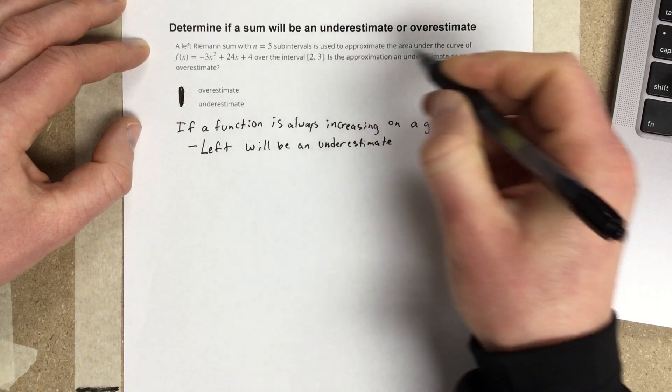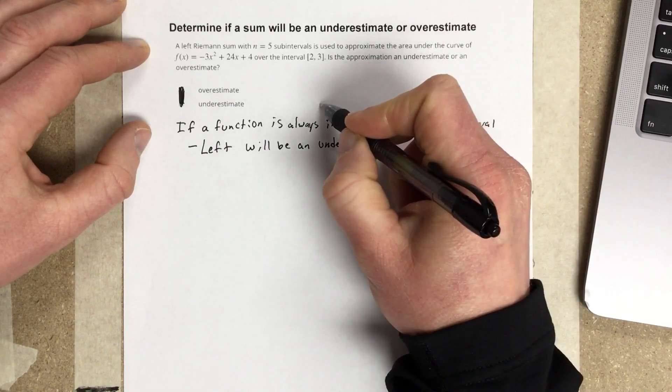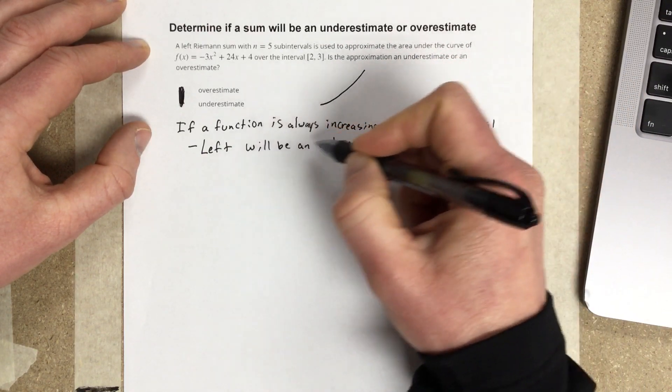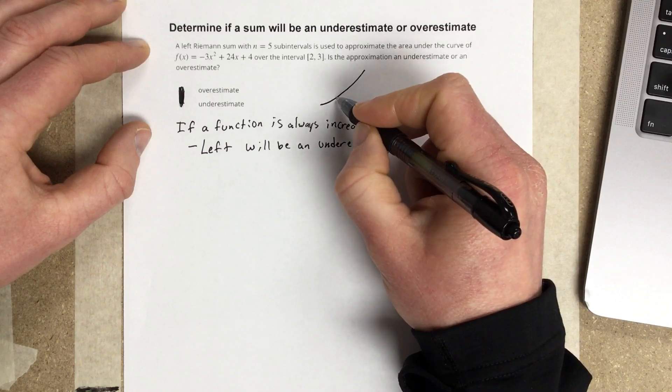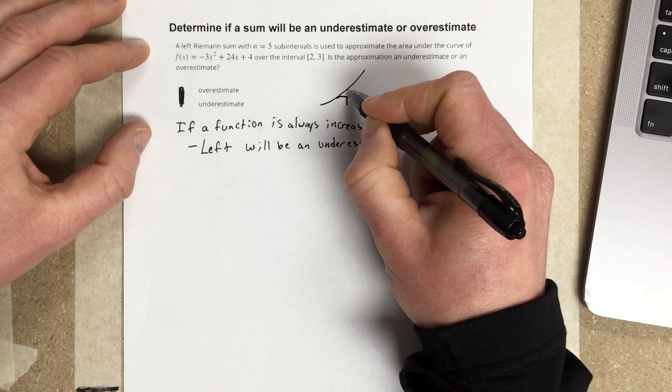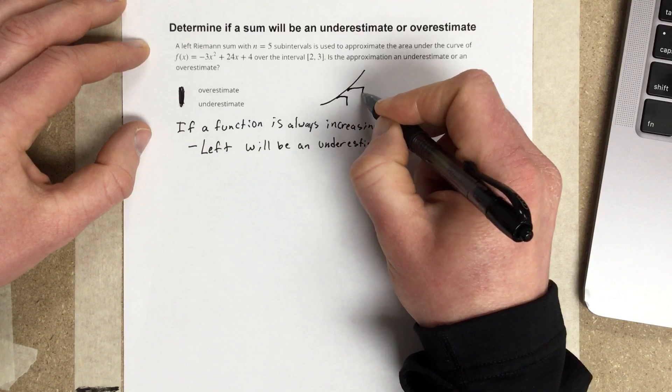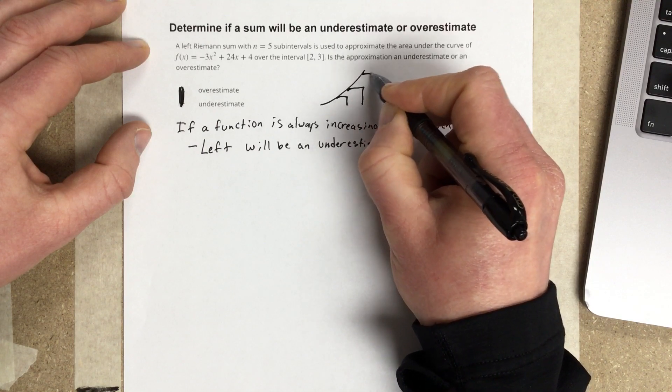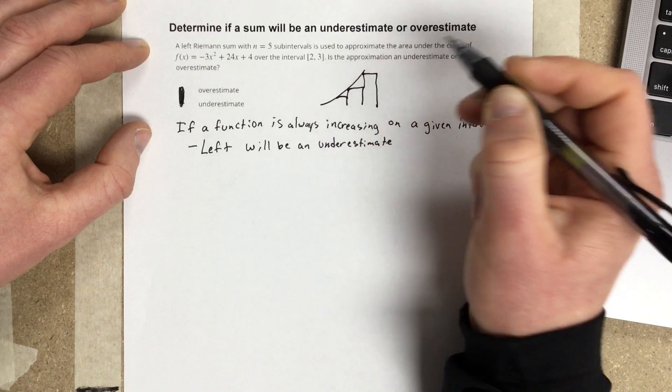And that would look like, I'm just going to draw it. So it's always increasing. If the function is always increasing and we're doing a left Riemann sum, every one of our rectangles would be underneath the curve. That would be our left Riemann sum.